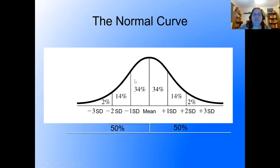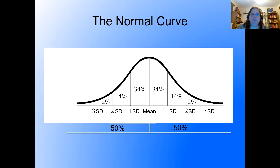So far, going from one SD below to one SD above captures 68% of people. Adding another 28% brings us close to 95%. Beyond two standard deviations in either direction, only 2% of people exist. Because the curve is symmetrical, 50% of people lie at the mean or above, and 50% lie at the mean or below.